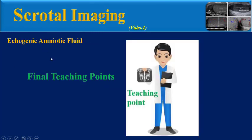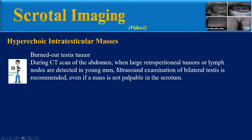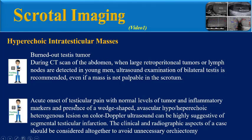Please pay attention to these final teaching points. During CT scan of the abdomen, when large retroperitoneal tumors or lymph nodes are detected in young men, ultrasound examination of bilateral testes is recommended even if a mass is not palpable in the scrotum, because we must always keep in mind that there may be a burned-out testis tumor. Acute onset of testicular pain with normal tumor and inflammatory markers and a wedge-shaped avascular hypo- or hyperechoic heterogeneous lesion on color Doppler ultrasound is highly suggestive of segmental testicular infarction. Clinical and radiographic aspects should be considered altogether to avoid unnecessary orchiectomy.